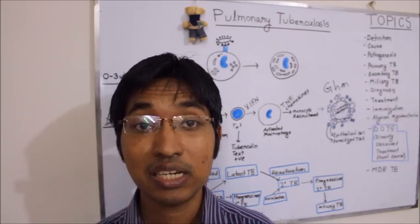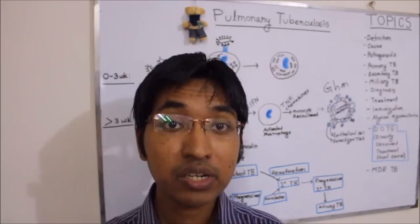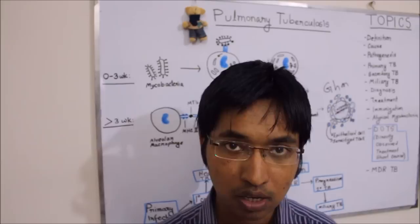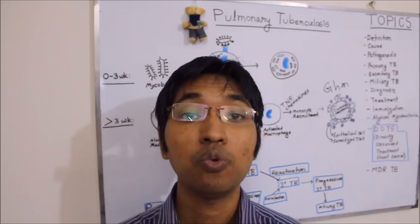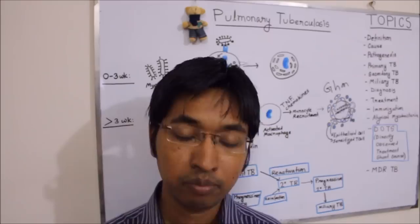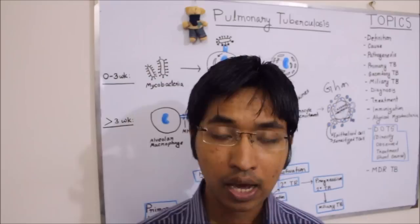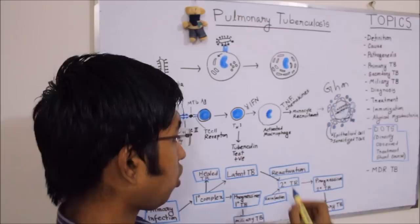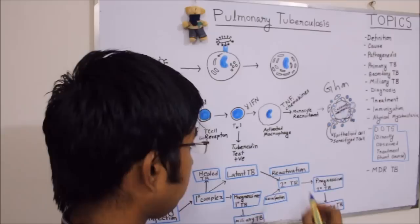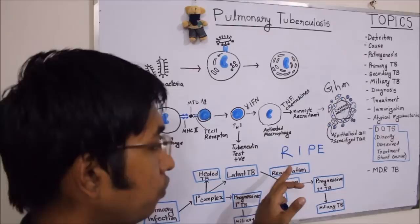The initial phase is followed by a continuation phase, where we try to kill the remaining bacteria. We usually give combination therapy. One way to remember the names of the drugs is the mnemonic RIPE — R-I-P-E.